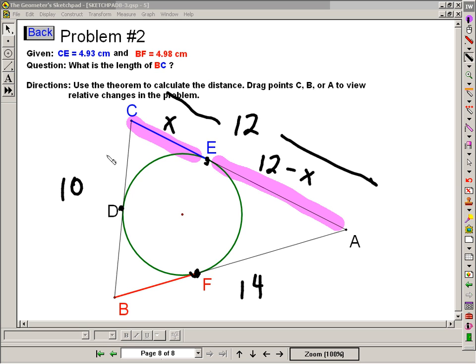Now we apply the theorem. If this is x, then this tangent must be the same. If this, oh, well now let's take this idea. If the whole thing is 10, whatever this part is, then this piece must be 10 minus that part. And again, applying the theorem. If this is 10 minus x, then so is this. If this is 12 minus x, then so is this.